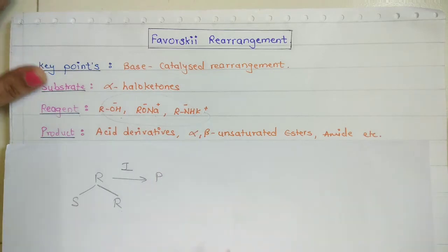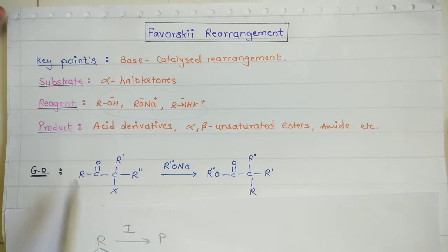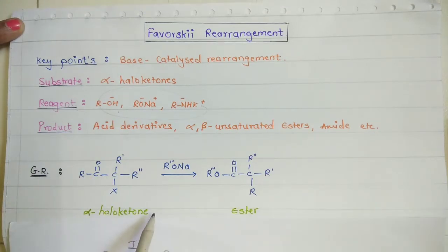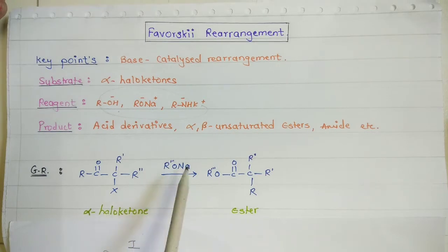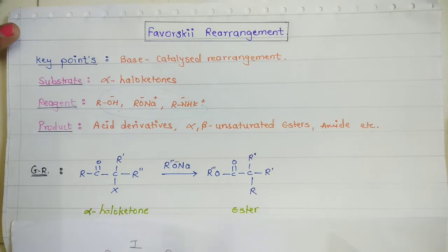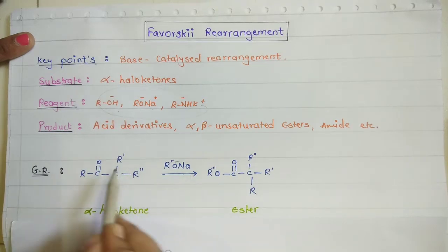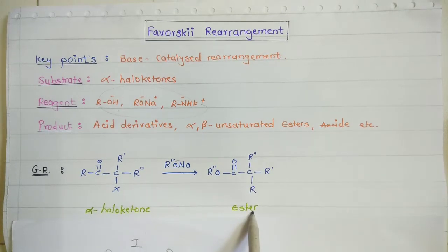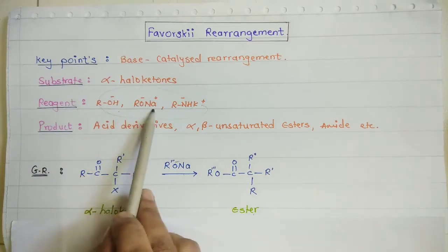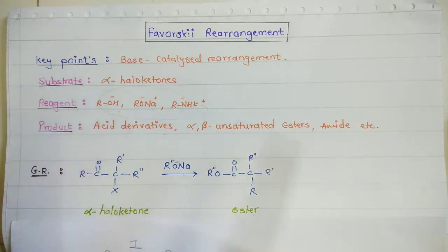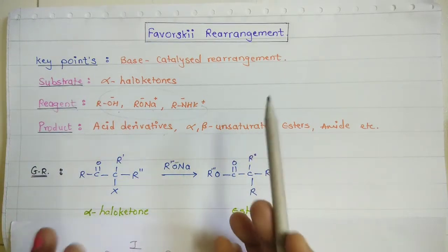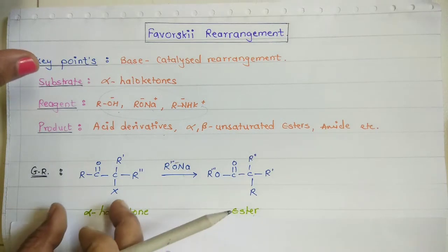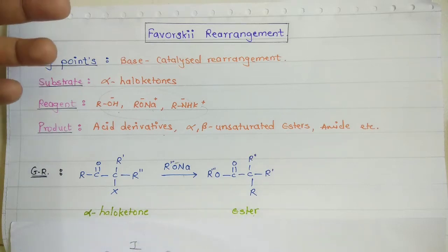Here is the general reaction for the Favorskii rearrangement. An alpha haloketone is reacted with a base — sodium methoxide (RO-Na). The negative part, the alkoxide, reacts with the alpha haloketone, and the final product is an ester because we are using an alkoxide reagent. If alcohol is used instead, the major product will be the acid derivative.